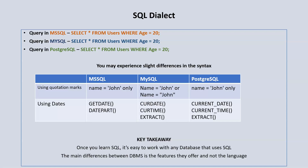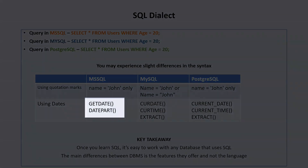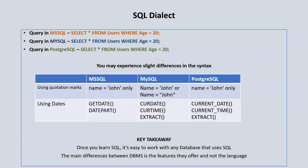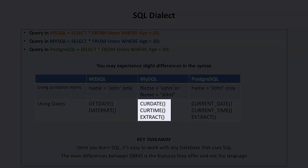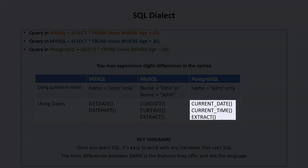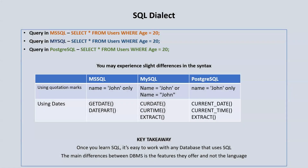Another area of difference is in how we retrieve date information. In Microsoft SQL, we can use the GETDATE() function to retrieve date information and DATEPART() to retrieve part of the date. In MySQL, we would use the CURDATE() function, the CURTIME() function to extract the time, and the EXTRACT() function. In PostgreSQL, we use CURRENT_DATE to retrieve date information, CURRENT_TIME to retrieve time information, and the EXTRACT() function to retrieve specific parts of the datetime.